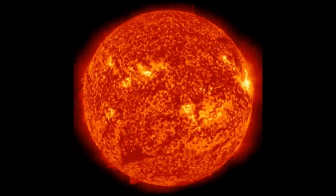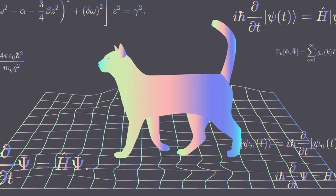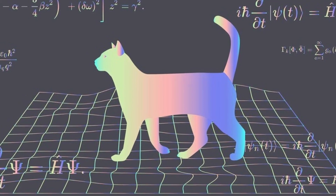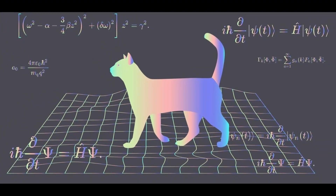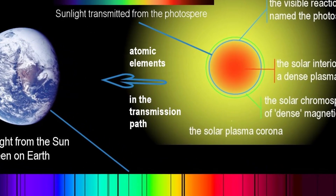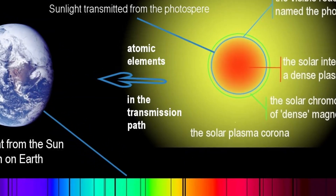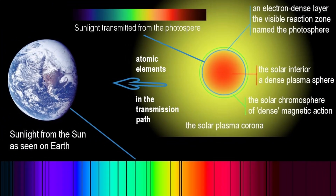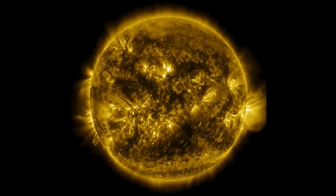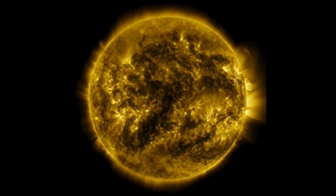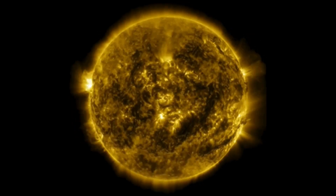To understand the origin of these lines, we had to wait until the development of quantum mechanics. As it is through the study of spectra that we have learned of many of the reaches in the universe around us, the development of astrophysics has also been closely linked to that of spectroscopy and quantum mechanics.